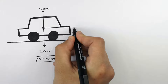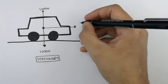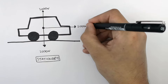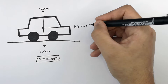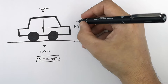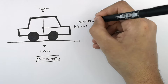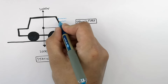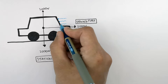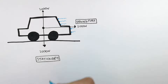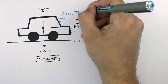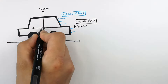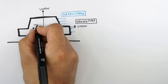The driving force has now been applied to the car, and this driving force is 3,000 newtons to the right, or forwards in the car's case. Because there is a driving force, and because there are air particles surrounding the car, there is going to be air resistance as the car moves through the air. The air resistance force in the opposite direction to the driving force is 1,000 newtons.